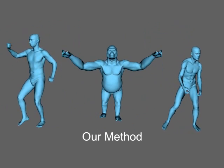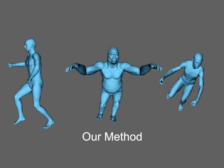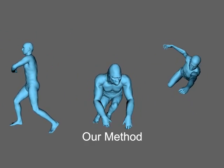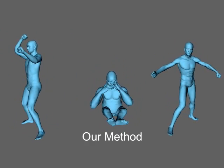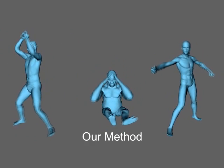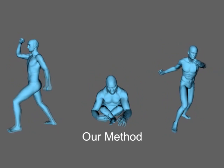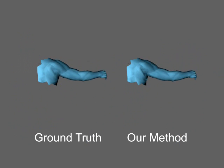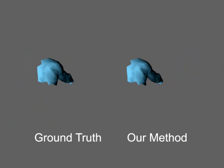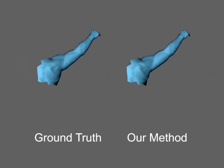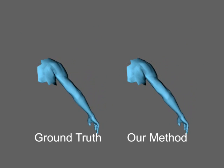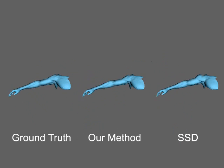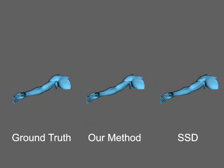We tested our technique on a variety of examples, including muscle bulging, shoulder deformations, skin sliding, and twisting. We can accurately express joints with more than one degree of freedom, like the shoulder. Here we illustrate rotations along all three degrees of freedom.